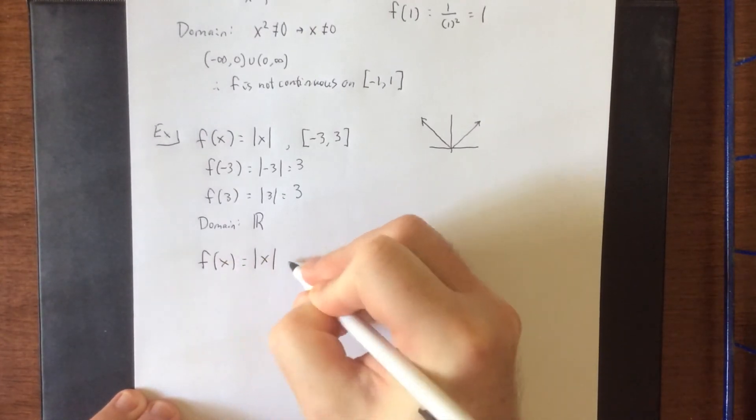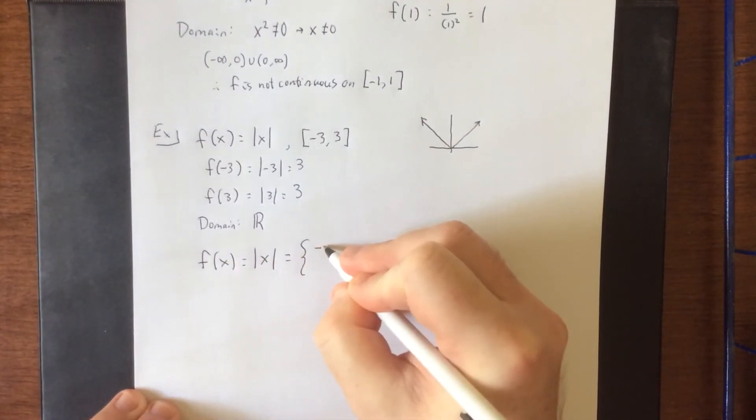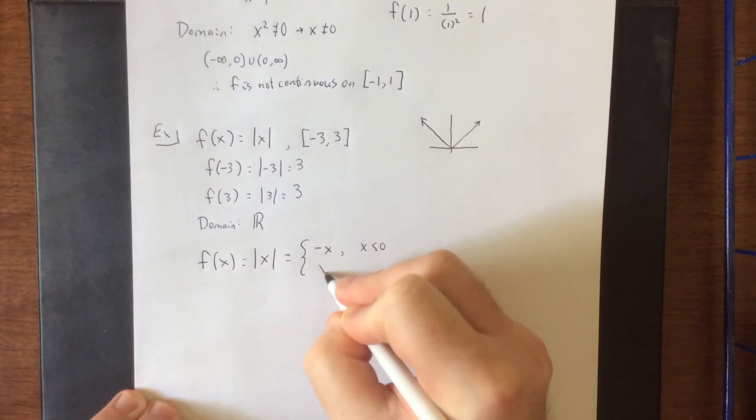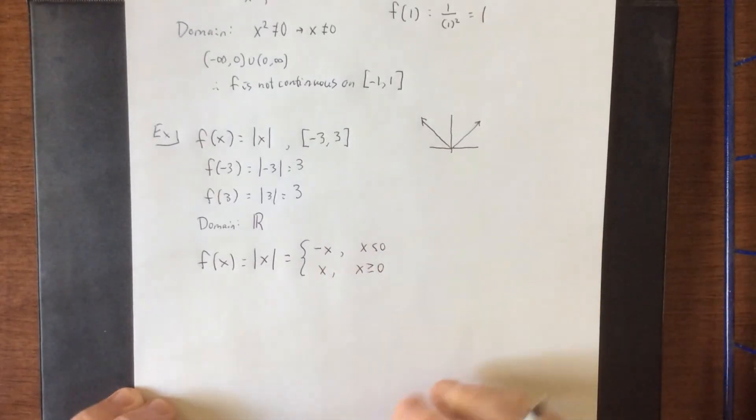Do keep in mind that the absolute value function is actually a piecewise defined function. It's equal to negative x if x is less than 0 and it's equal to positive x as long as x is greater than or equal to 0.